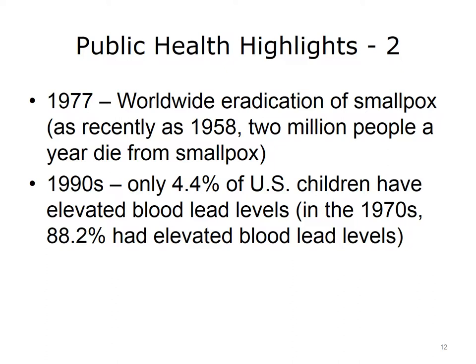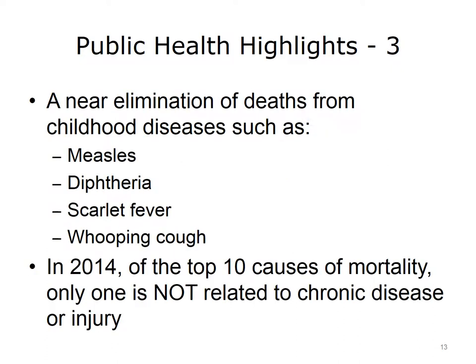In the 1970s, a huge majority — 88% of U.S. children — had elevated levels of lead in their blood, but by the 1990s, public health had reduced that percentage to only 4.4%. Childhood illnesses used to be devastating to the population, but both medical progress and public health efforts have nearly eliminated deaths from illnesses such as measles, diphtheria, scarlet fever, and whooping cough.